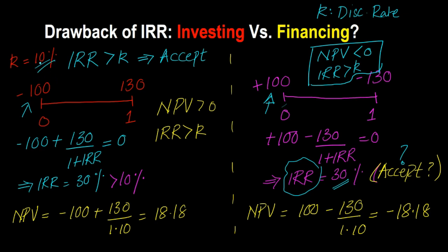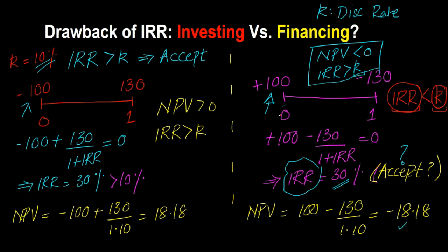Obviously you should borrow at 10%. So whenever you are in a situation with a financing project — not an investment project — one with unconventional cash flows, the decision rule reverses with respect to IRR. Here, the right decision is to accept the project if and only if the IRR is less than K. Because in this situation, IRR is the actual rate at which you are borrowing and K is the rate at which you can borrow elsewhere. It only makes sense to borrow if the actual rate is less than the alternative rate.